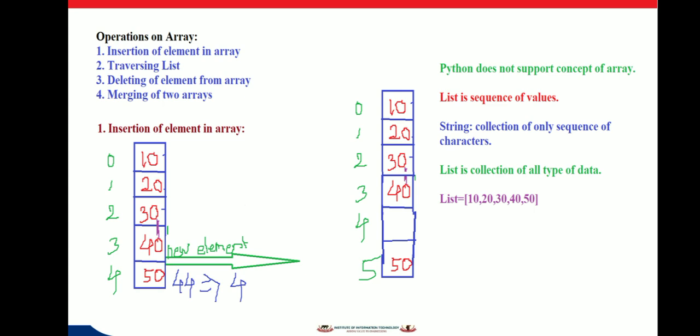It may be character, integer, or float. The values in a list are called elements or items.